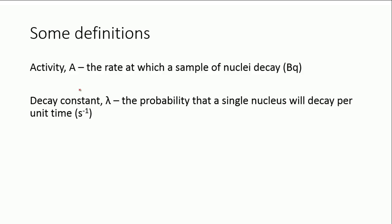Let's start off with some definitions. The word activity is actually to do with a sample of nuclei, so we've got a large amount of nuclei, and the activity is the rate at which the sample are decaying. The rate is effectively how many are decaying per second, but activity has its own unit.